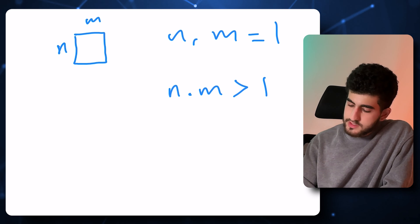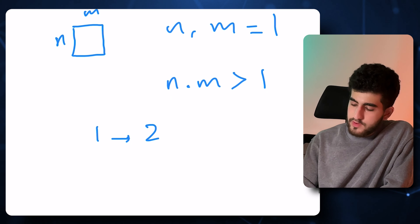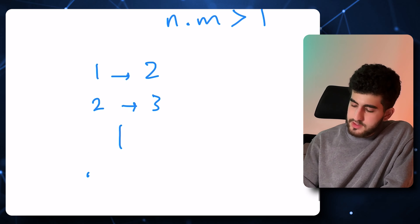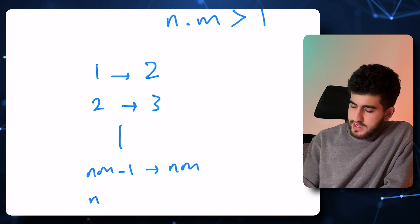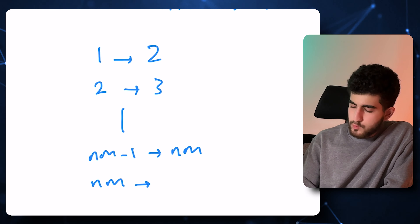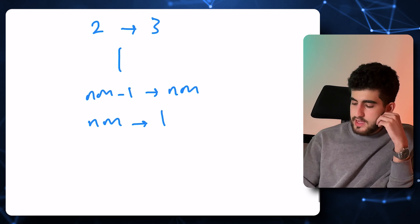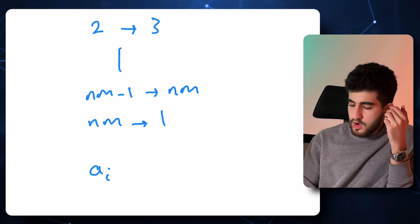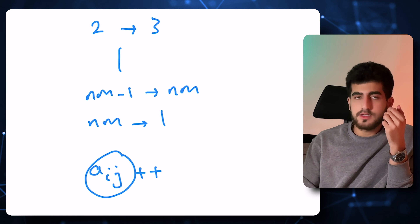Wherever 1 is, we can put 2 there. Wherever 2 is, we can put 3 there, and so on. Wherever nm-1 is, we can put nm there. And wherever nm is, we can put 1 there instead. So it's like we are rotating everything. For each value A of i and j, we just add them by 1, and only if they were nm, we turn them into 1.